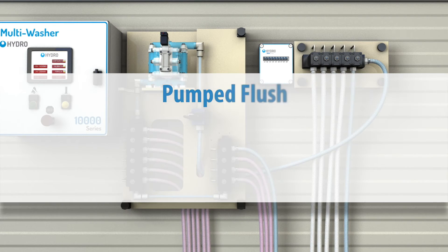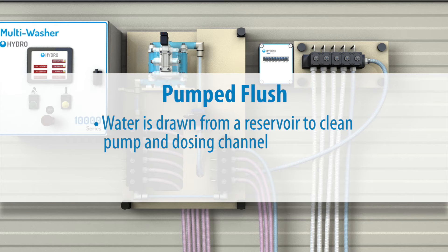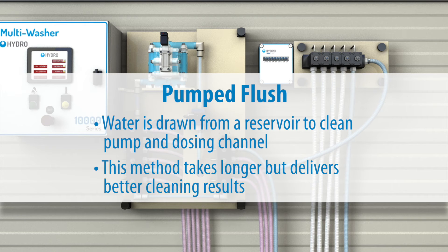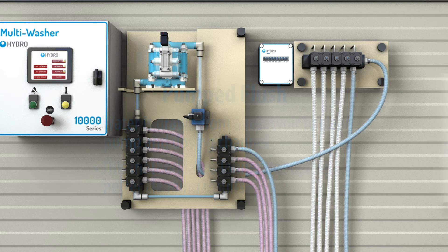Alternatively, with a pumped flush, the pump draws water from the reservoir much like a product to clean the pump and dosing channel. This method takes longer but typically results in better cleaning of the pump and channel. Regardless of the method chosen, when the water flush is completed, the collector valve and distributor valves are closed and the channel dosing process is ready to begin again.